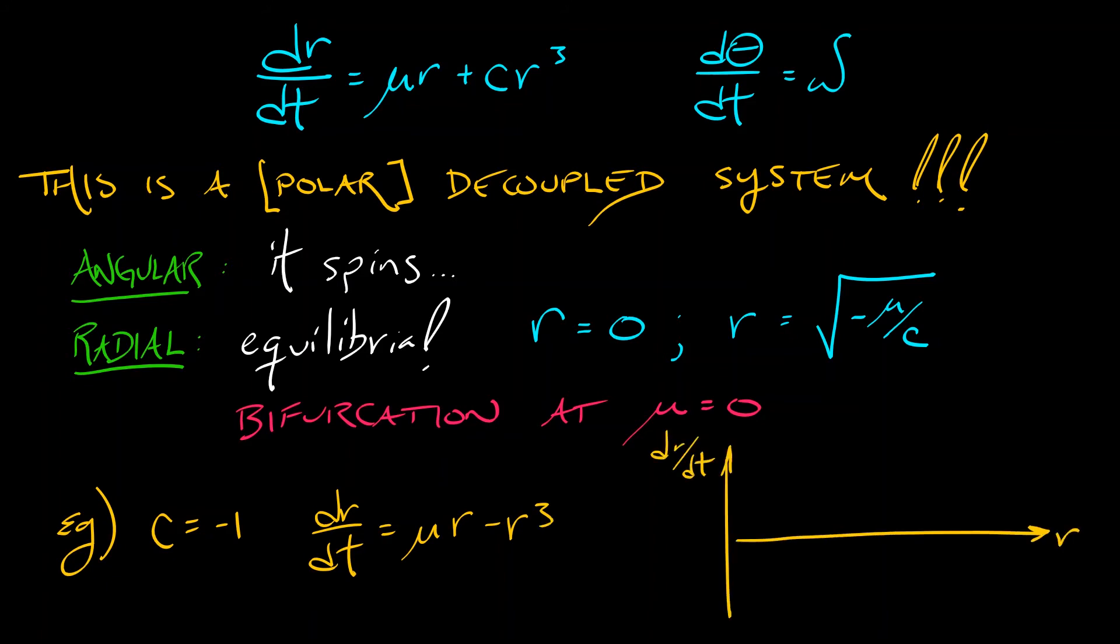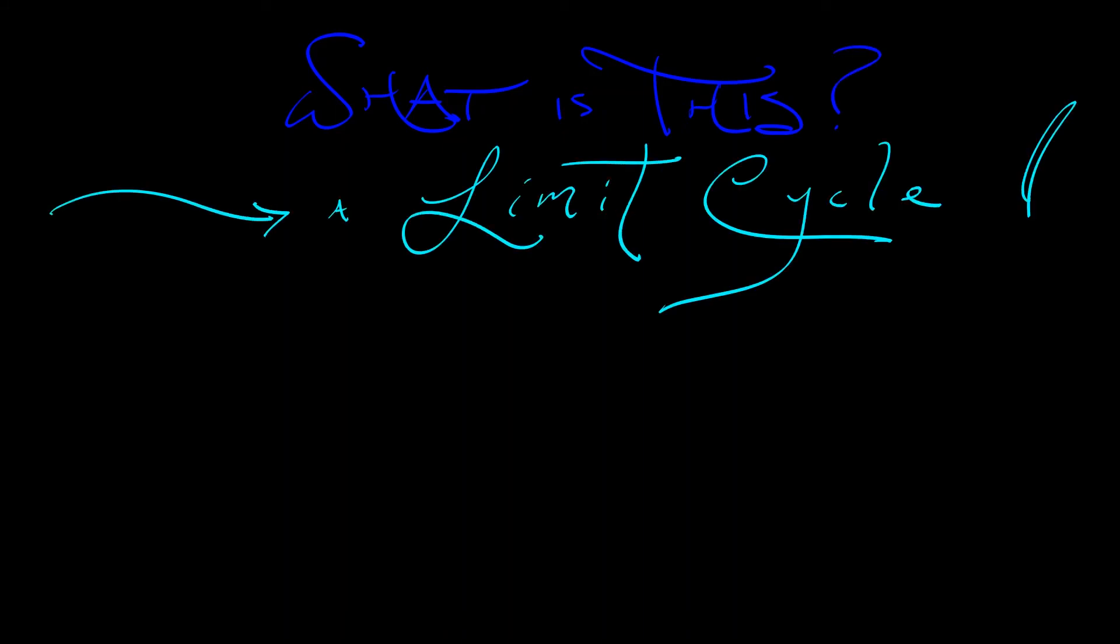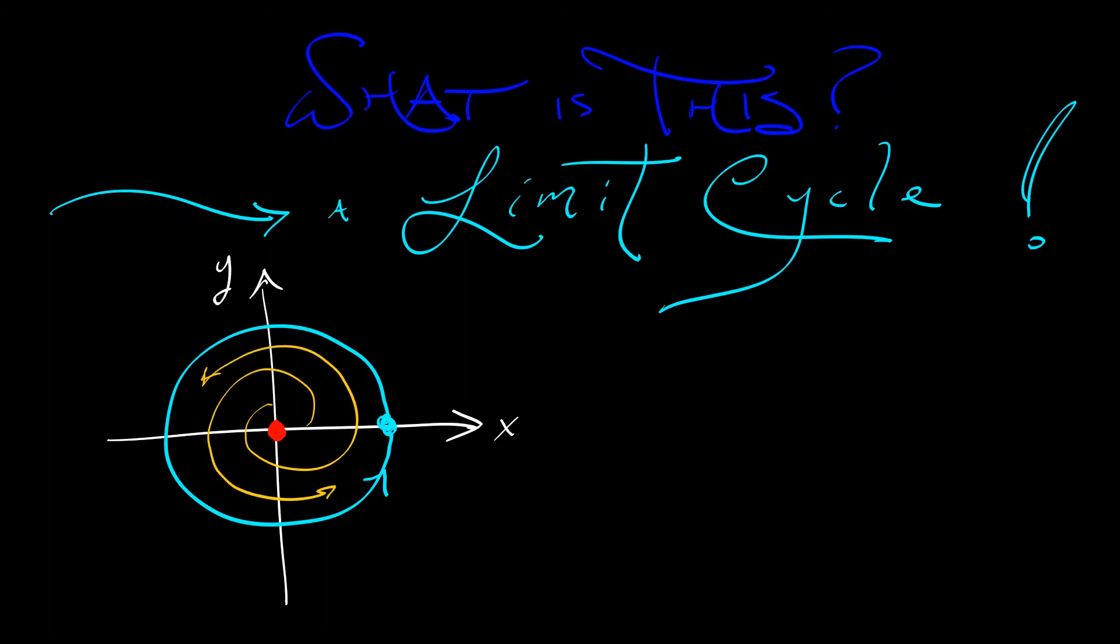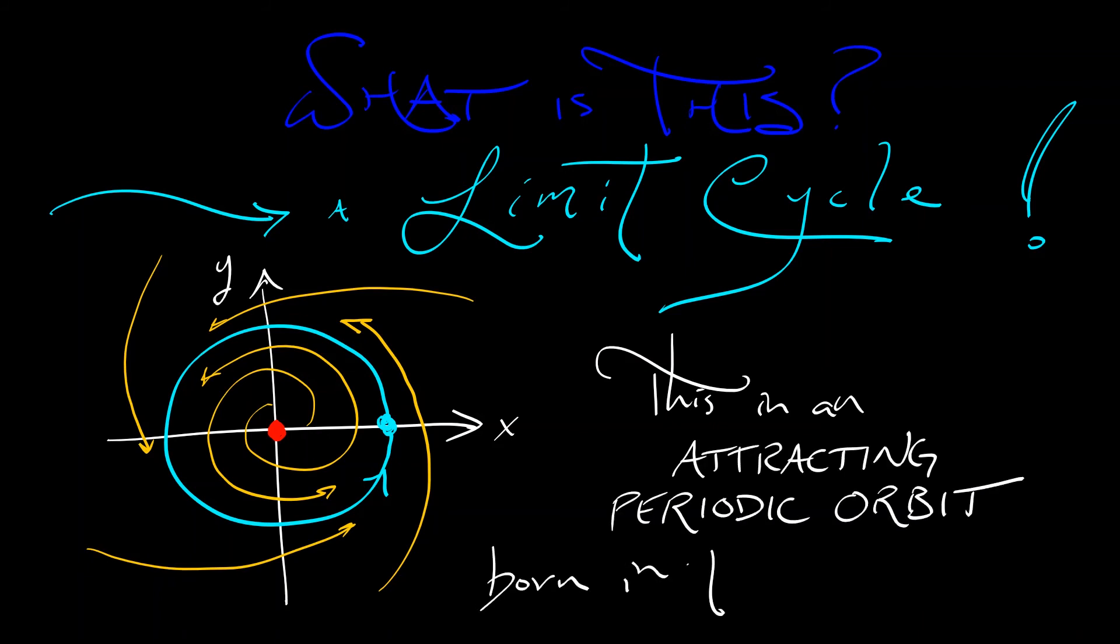And indeed, for values of mu that are positive, we have a stable equilibrium at square root of mu. We have that unstable equilibrium at 0. Now, what is this? What does this mean? I'm always moving in the angular direction, and in the radial variable, I am typically converging to the stable equilibrium. What is this? This is called a limit cycle. This is an attracting periodic orbit that is born in the bifurcation as mu passes through 0. That stable spiral sink at the origin becomes unstable. But that's local. Globally, everything is still getting sucked towards the origin. So that stable and that unstable compete, and a limit cycle, an attracting periodic orbit, is born.